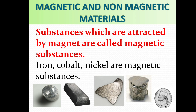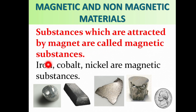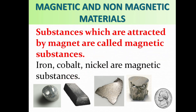Magnetic and non-magnetic materials. Substances which are attracted by a magnet are called magnetic substances. Iron, cobalt, and nickel are magnetic substances.